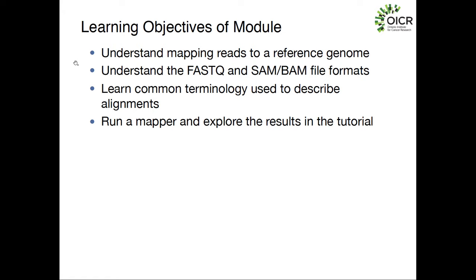On batch effects: we think about those a bit downstream of primary data analysis. What we're discussing today and tomorrow is taking sequencing data and generating somatic mutation calls or copy number calls. Batch effects come in later when you're analyzing results from maybe 50 to 100 sequenced genomes jointly — for example, asking whether certain variants are only seen from one sequencing center versus another. I'll try to bring that in, but it's a bit downstream of today's focus.